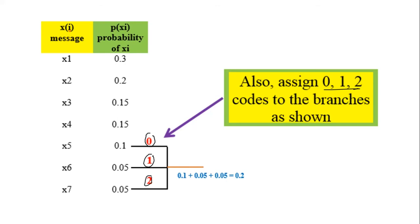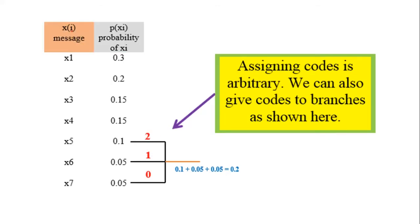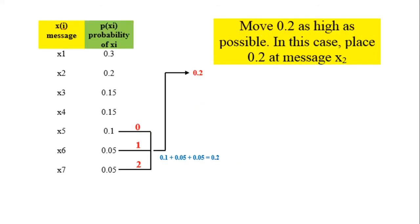As shown here, assigning codes to branches is arbitrary. We can also assign 1, 0, or 1, 2, 0 — we can assign the codes to the branches in various ways. The next step is to move the combined probability 0.2 as high as possible. We can also use the rule 'move as low as possible', but in this example we follow 'as high as possible'.